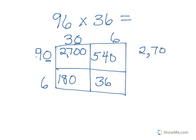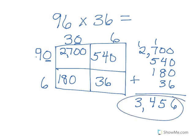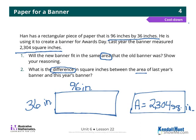2,700 plus 540 plus 180 plus 36. Adding those up gives us 3,456 square inches. So this year's banner is going to be 3,456 square inches.